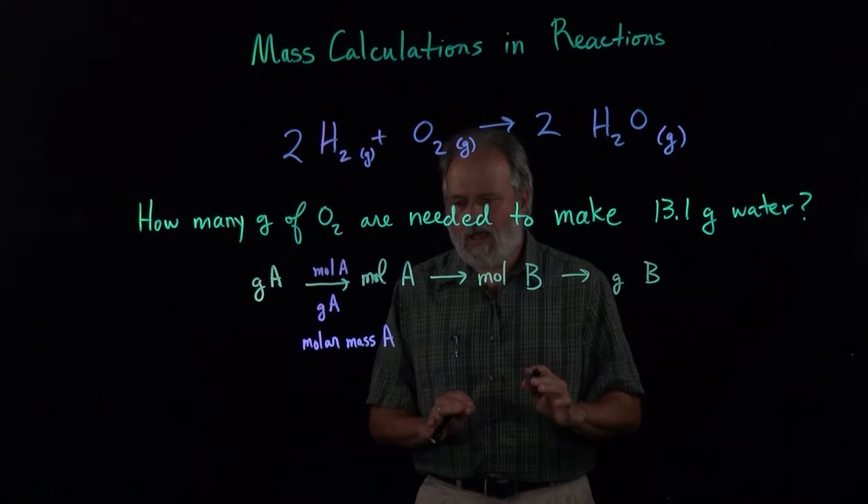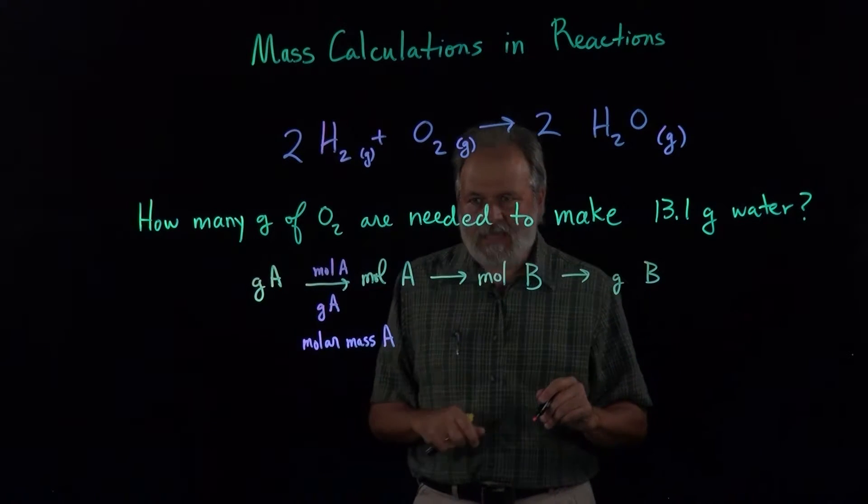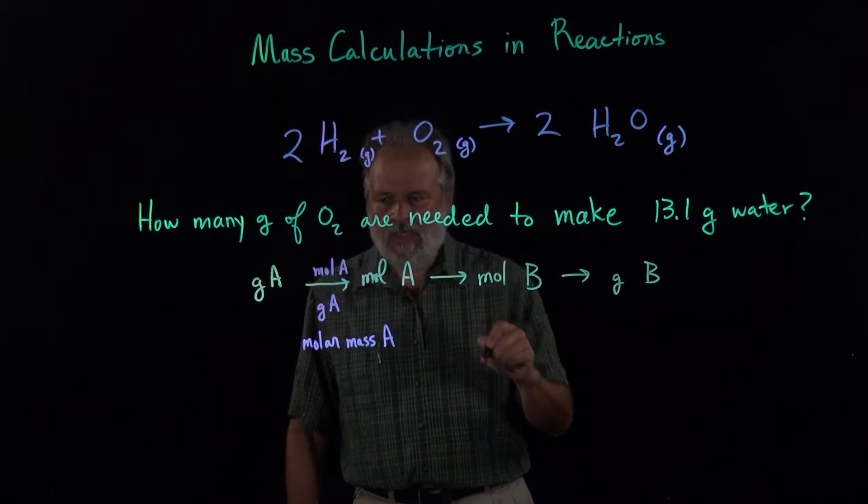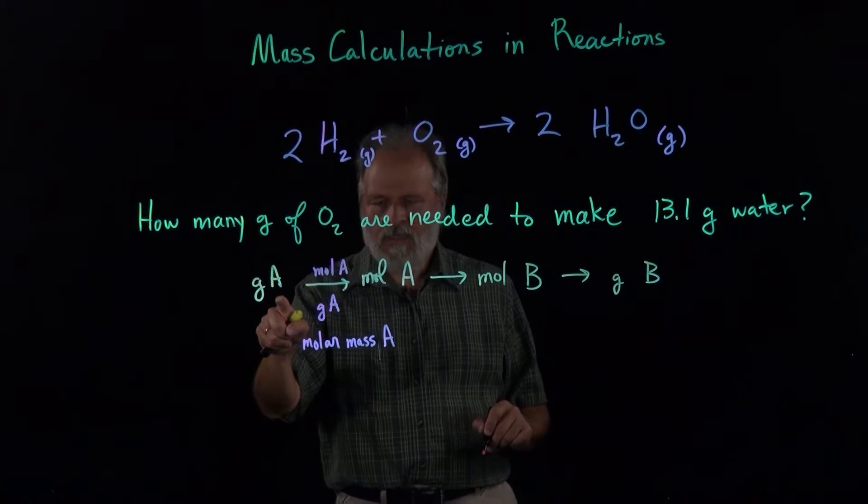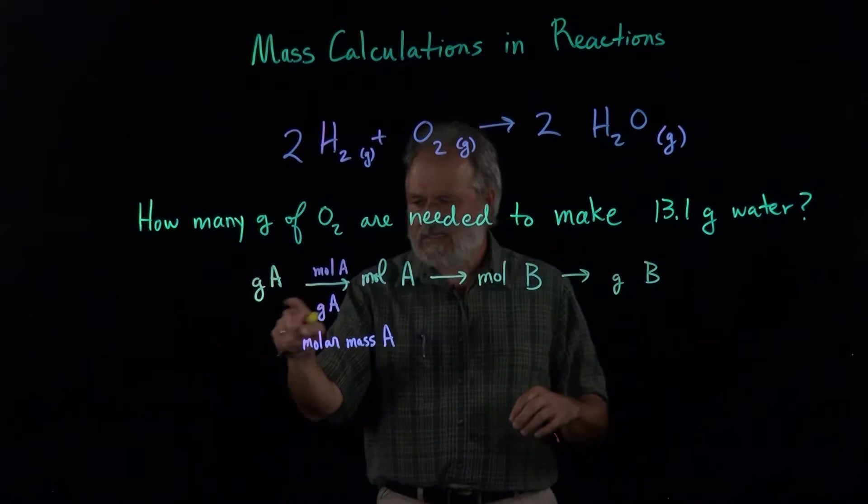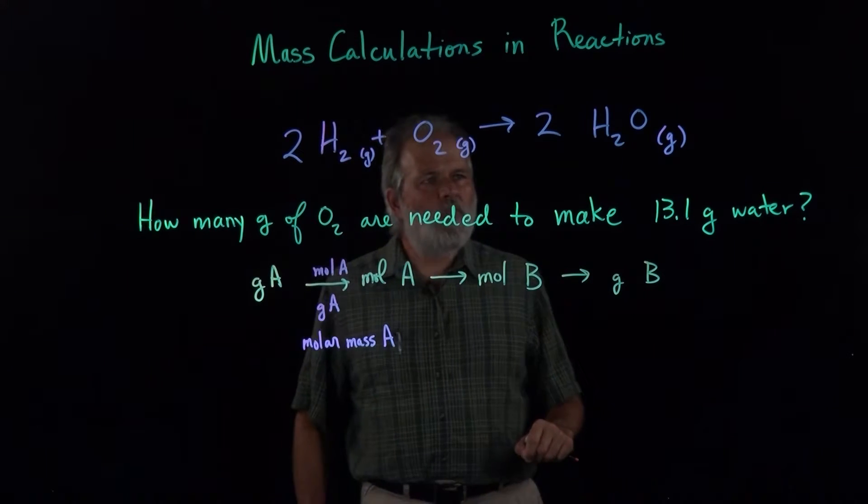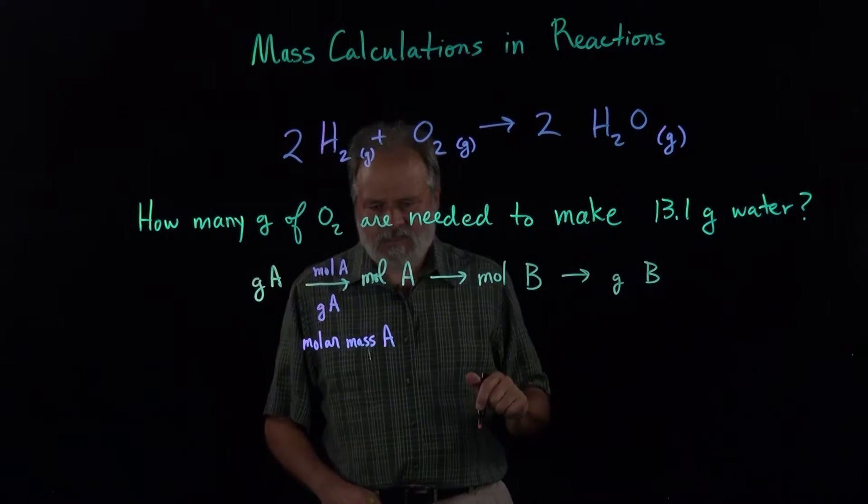So to work this problem, we actually need to know that we need the molar mass of water. So this will be water, because grams of water is what we actually know. We don't know grams of oxygen. That's what we're trying to get to. So A is water, B is oxygen molecules.